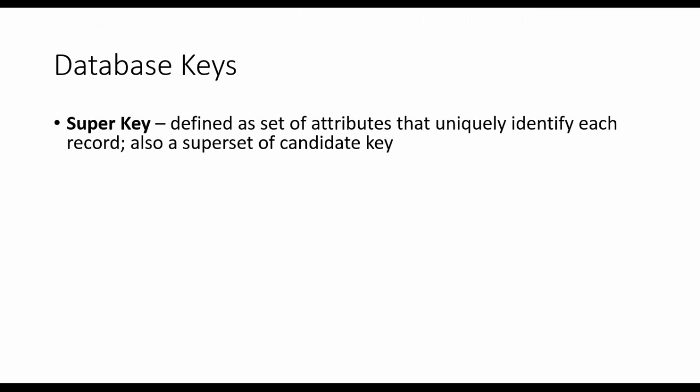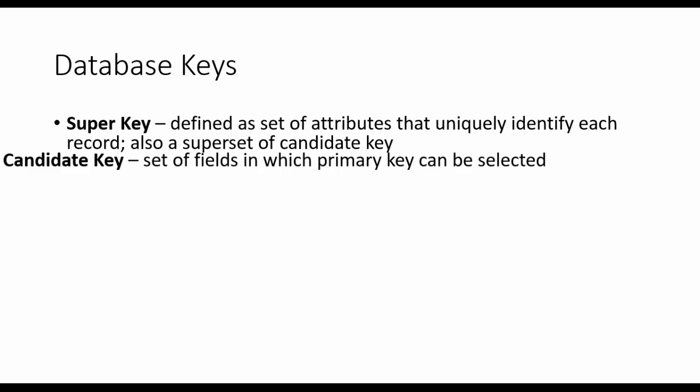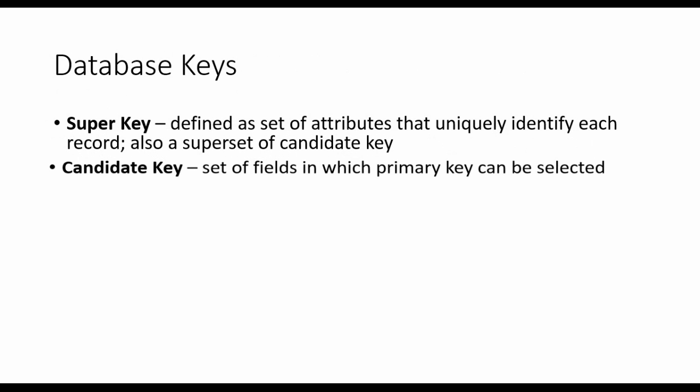First, a super key. A super key is also a superset of a candidate key. It is a set of attributes that uniquely identify each record — for example, ID, name, email ID, or username which will identify a particular record is called a super key.